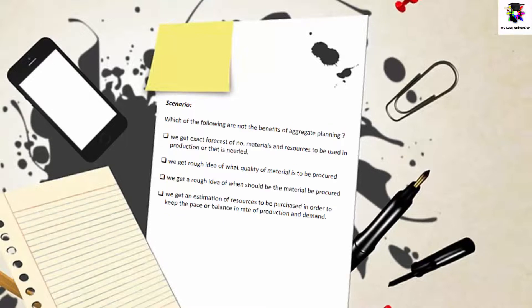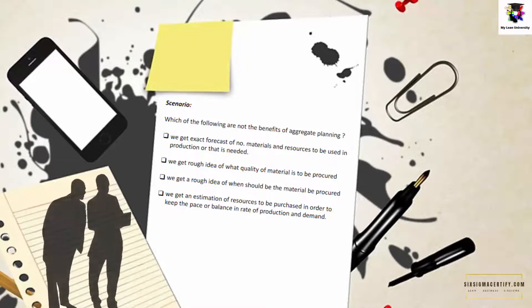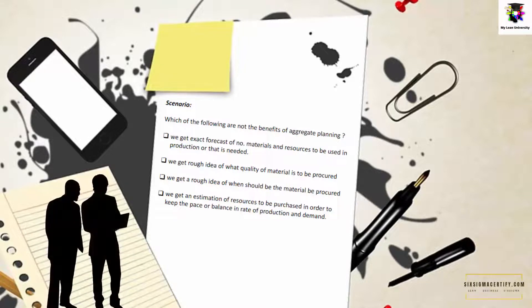Let us see the second question: Which of the following is NOT a benefit of aggregate planning? Option 1: we get an exact forecast of the number of materials and resources to be used. Option 2: we get a rough idea of what quantity of material is to be procured. Option 3: we get a rough idea of when the material should be procured. Option 4: we get an estimation of resources to be procured to balance the rate of production and demand. Take a moment to think — you can pause the video now.